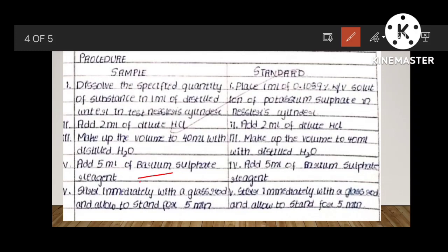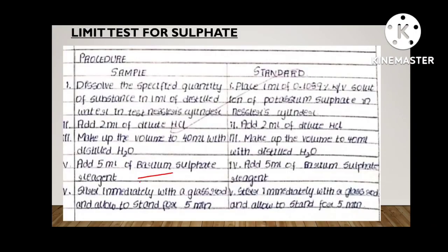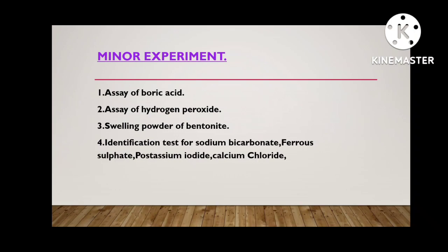After allowing the two Nessler cylinders for 5 minutes, observe the opalescence. If greater opalescence in standard means your limit test passes. If the opalescence or turbidity is greater in the test or sample compared to standard, then your limit test fails. Always your standard should show greater opalescence, greater turbidity than the test or sample. This is mandatory. You have to write down the procedure and observation. Next, refer limit test for heavy metals. For some students they are giving heavy metals, but mostly 90 percent they are giving sulfate and iron.